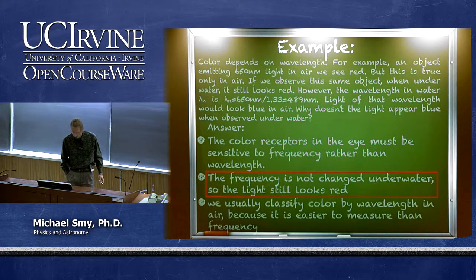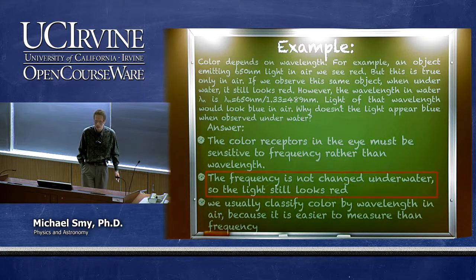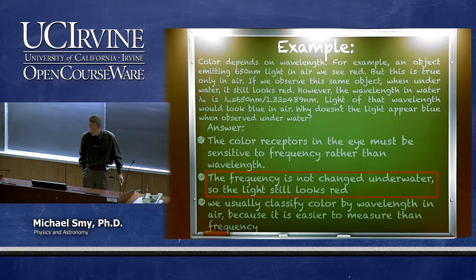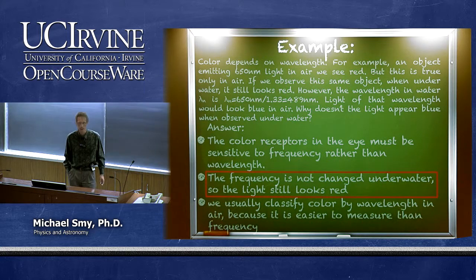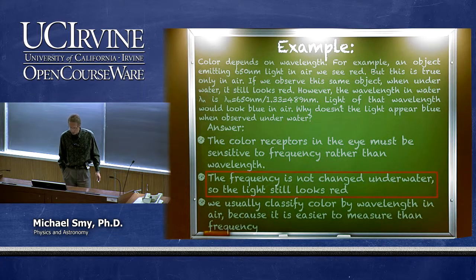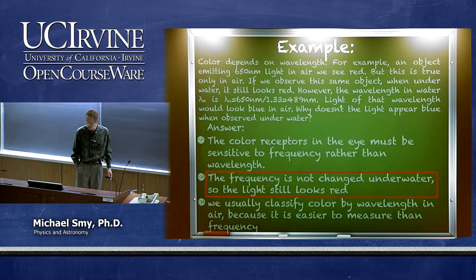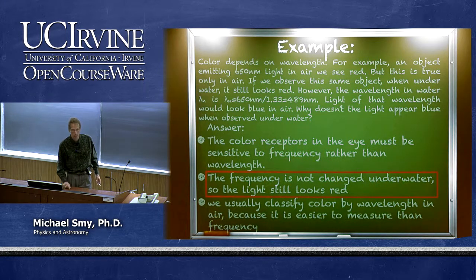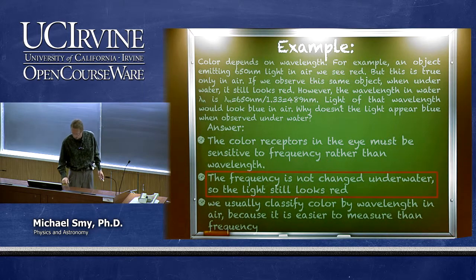The answer is that our color receptors in the eye must be sensitive to frequency rather than wavelength. Since the frequency is not changed underwater, the light still looks red. However, we still classify color by wavelength rather than frequency because it is easier to measure wavelengths — optical frequencies are on the order of 10^14 hertz, which is very difficult to measure directly.